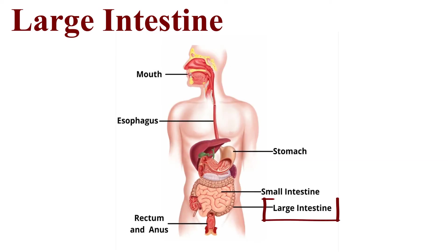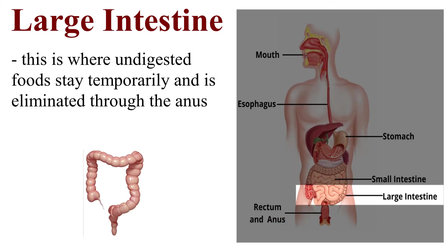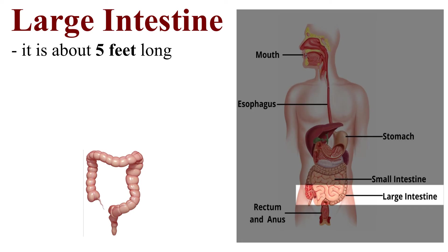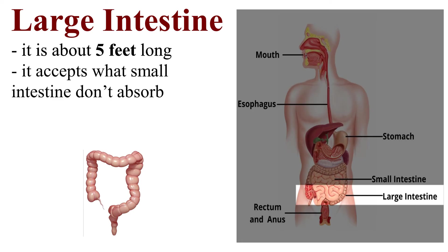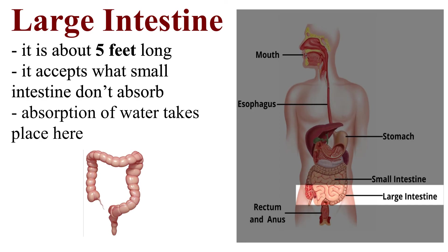The Large Intestine is where undigested foods stay temporarily and are eliminated through the anus. It is about 5 feet long. It accepts what the small intestine doesn't absorb, and absorption of water takes place here.